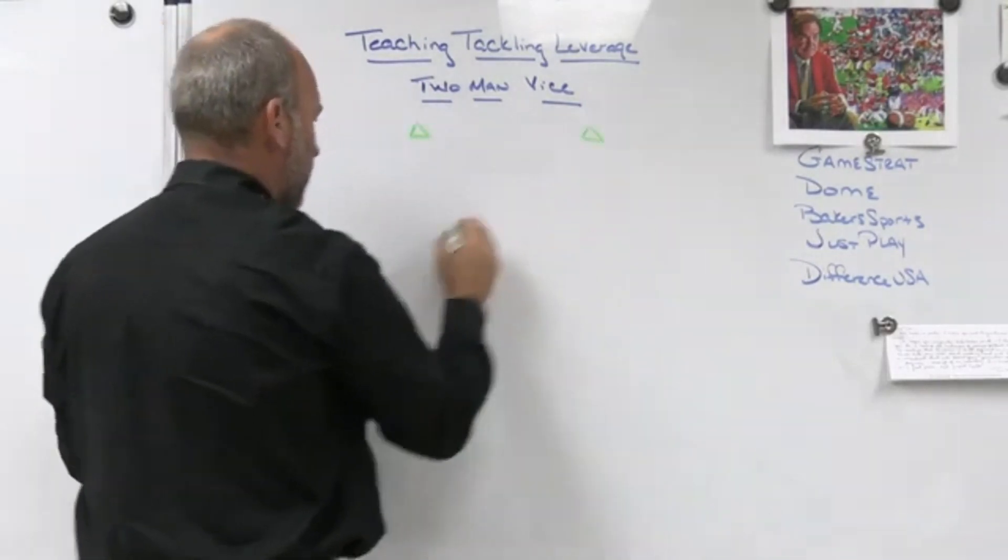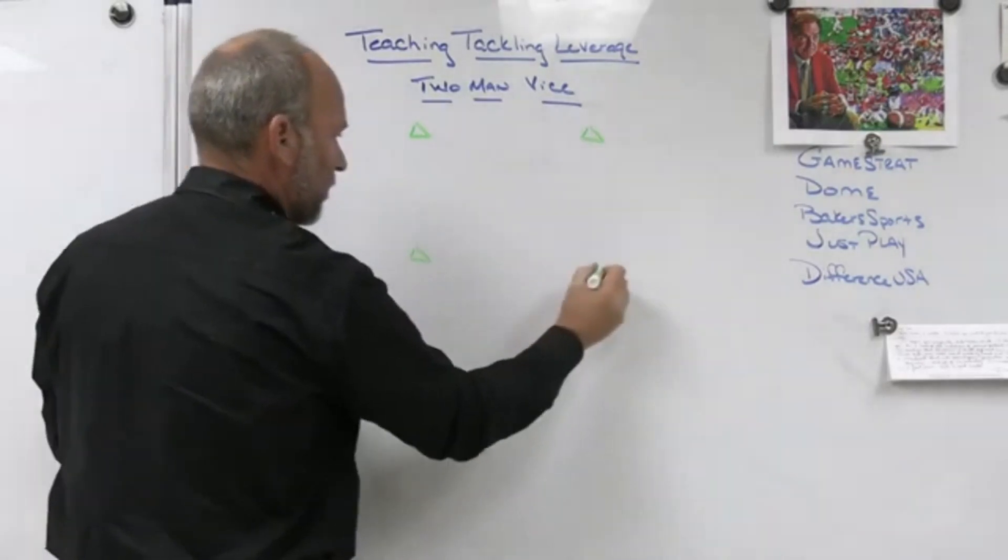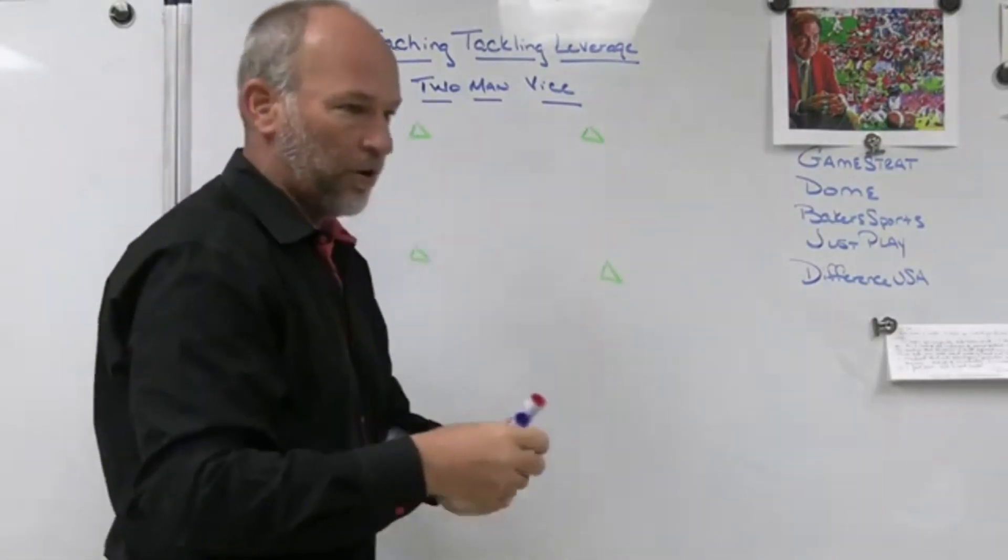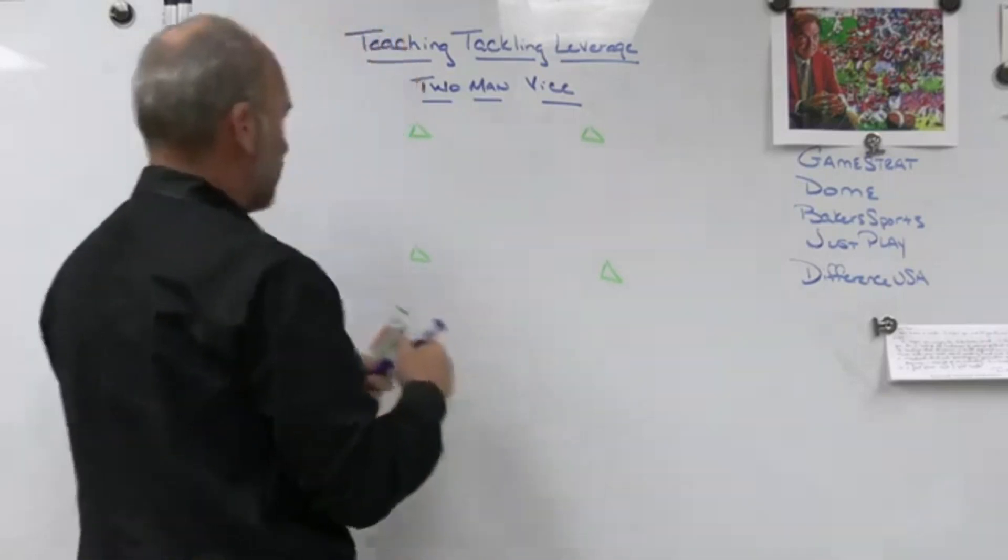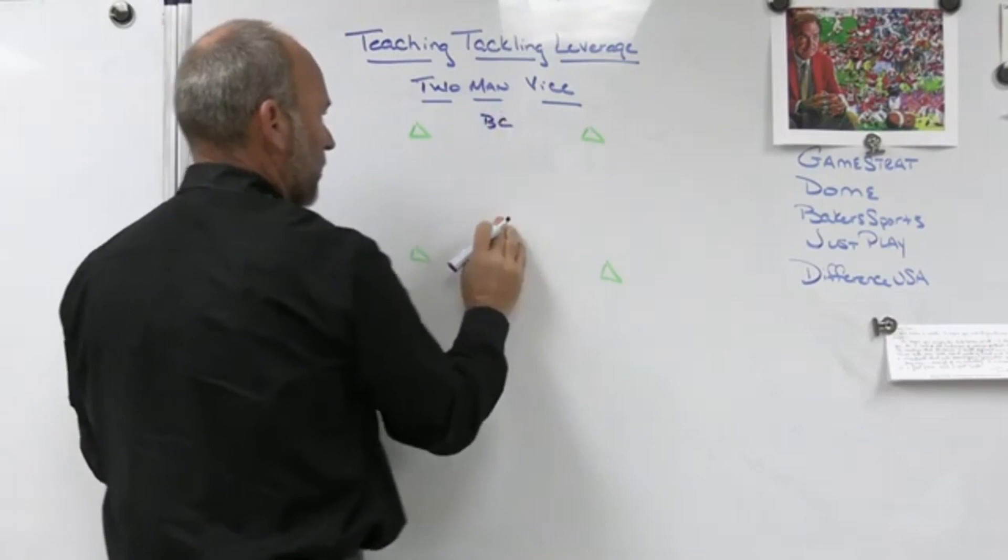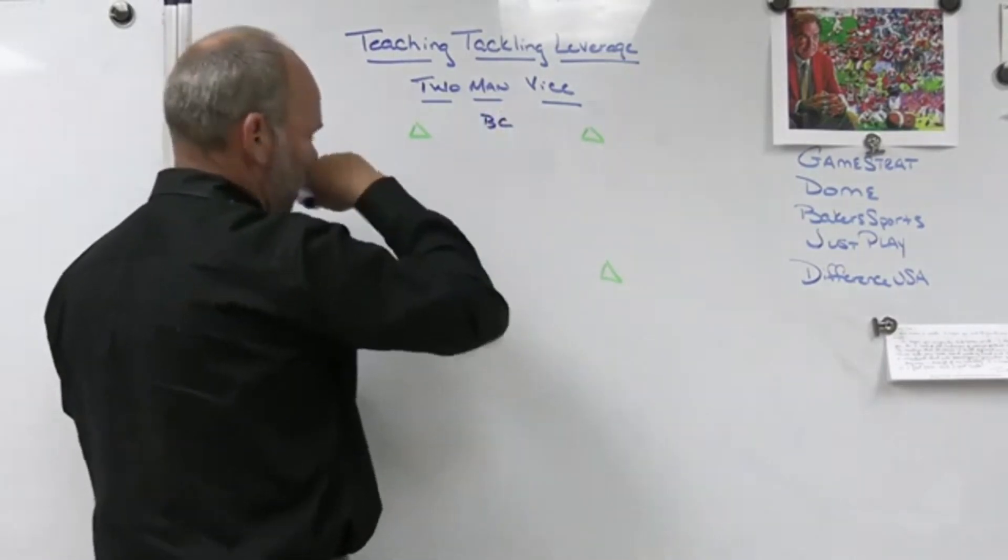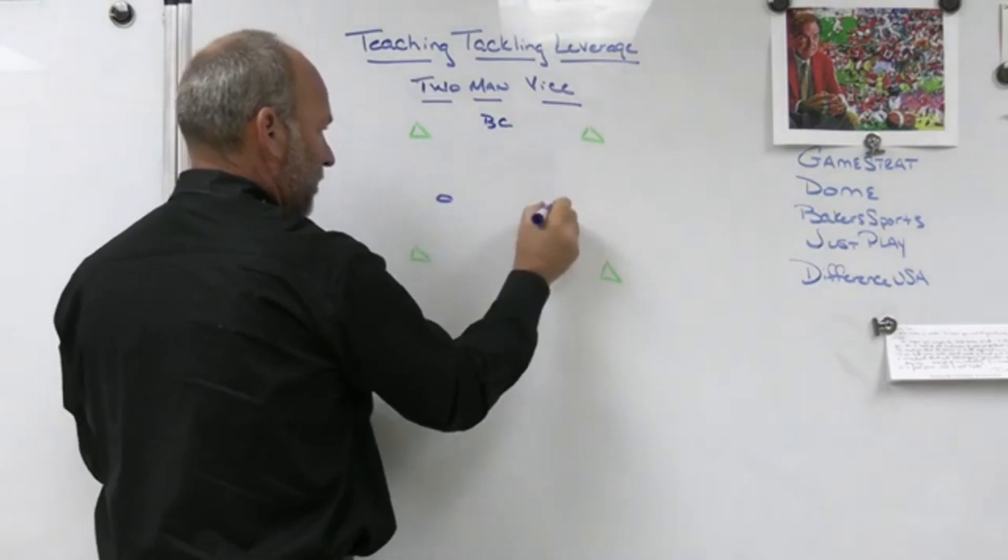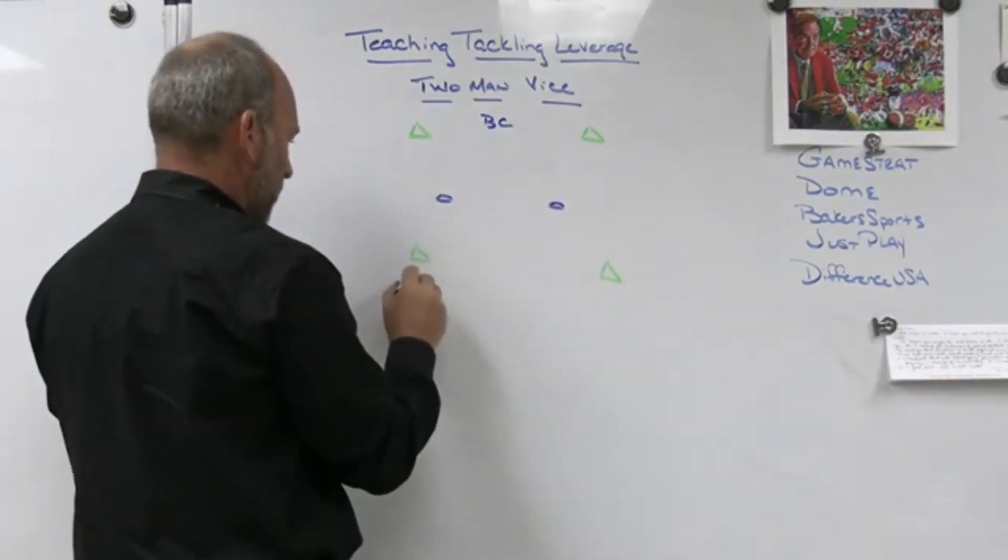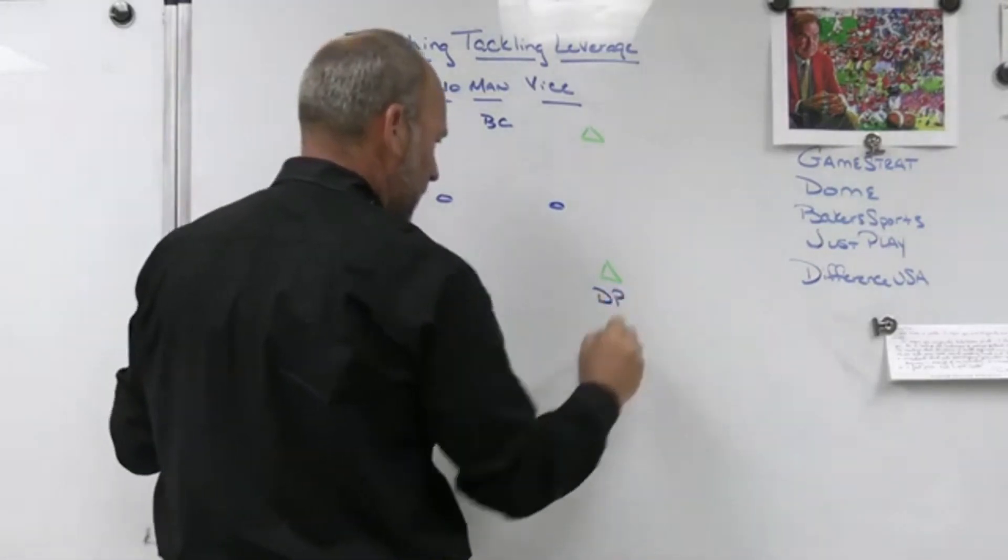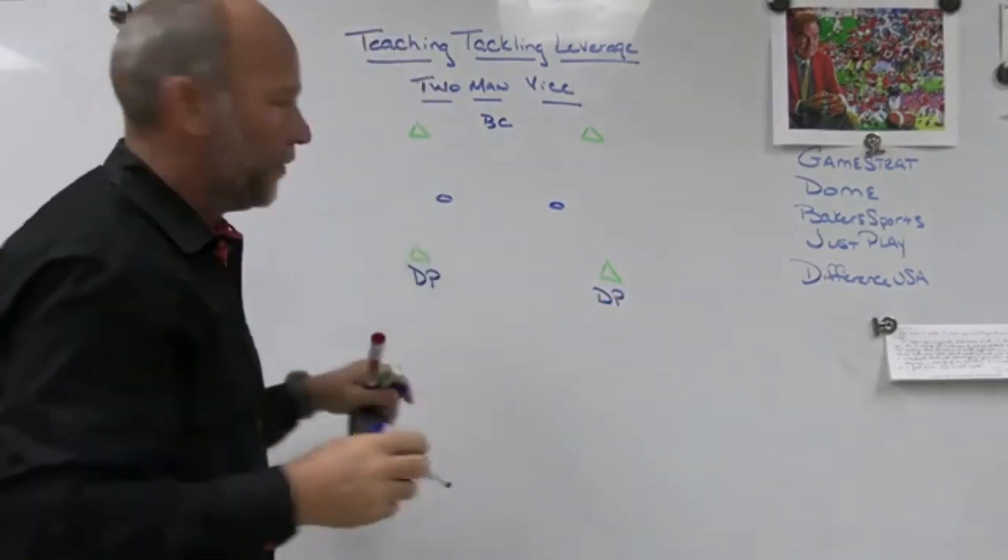So there'll be four cones down. When we start the drill the first time, we're going to start it very simple, just a ball carrier right here. And then what I'll do is I'll put dots down halfway in the drill like a flat dot here and a flat dot here. We'll start with defensive players here facing the ball carrier.